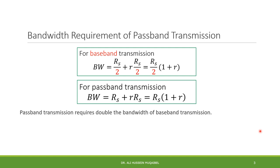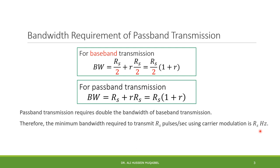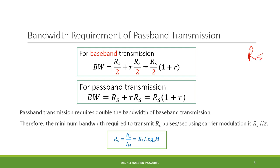Passband transmission requires double the bandwidth of baseband transmission. Therefore, the minimum bandwidth required for transmission of Rs pulses using carrier systems is Rs hertz — bandwidth equals rate as the minimum requirement. Remember that these equations relate the symbol rate Rs (symbol rate) whereas Rb stands for the bit rate. They are related as follows: the symbol rate is generally less than or equal to the bit rate; in the binary case, the symbol rate equals the bit rate.